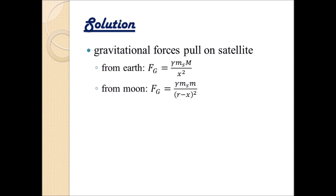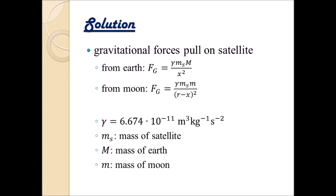On the other hand, there's also the gravitational force coming from the Moon pulling on the satellite. It has the same structure: F_g equals gamma times m_s times m (lowercase, mass of the Moon), divided by the distance squared. This distance is the distance between the satellite and the center of the Moon, which equals r minus x. The gravitational constant gamma equals 6.674 times 10 to the power of minus 11 m³/(kg·s²). Here, m_s is the mass of the satellite, uppercase M is the mass of Earth, and lowercase m is the mass of the Moon.